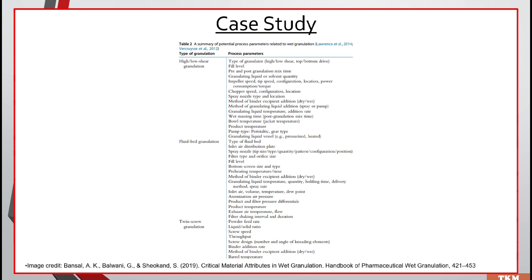Here is another case study showing potential process parameters related to wet granulation. For high or low shear granulation, the parameters include fill level and granulation mix time. For fluid bed granulation, the parameters include type of fluid bed, spray nozzle, and fill level. These are the potential process parameters.